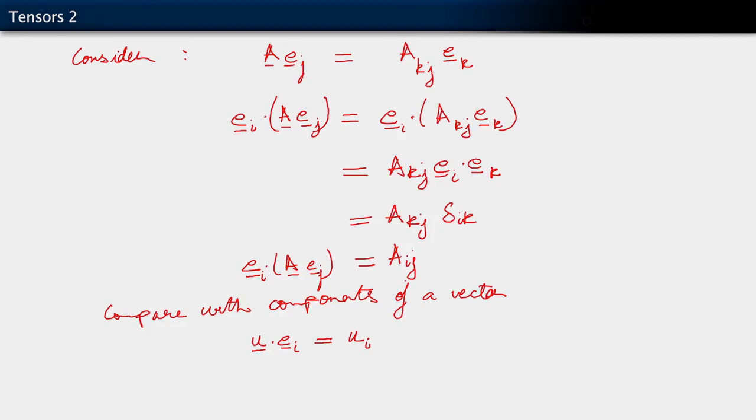The components of A have two indices, i and j, and that is got at by dotting A, first by having A act upon E_j, and then dotting the resulting vector with the basis vector E_i.